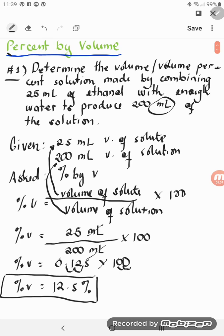That's the answer. 12.5% is the percent by volume of the solution. You are now ready for problem number 2.